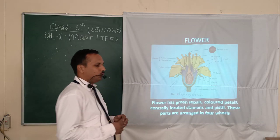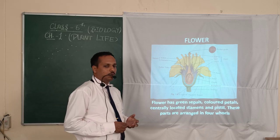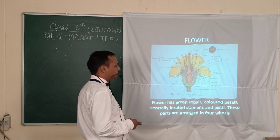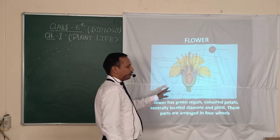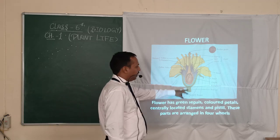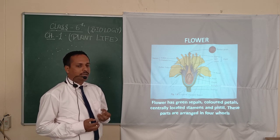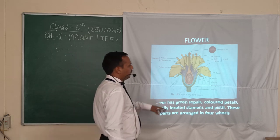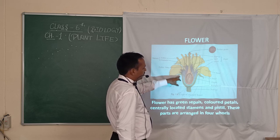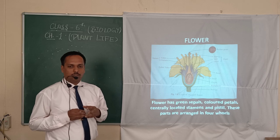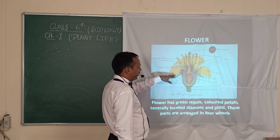Now we are going to look at the flower. Flowers come in different colors — red, orange, yellow, green. The colorful part of the flower is called the petal, and it is supported by the sepal. The sepal is connected with the branch. These parts are the responsible platform for fertilization and pollination.